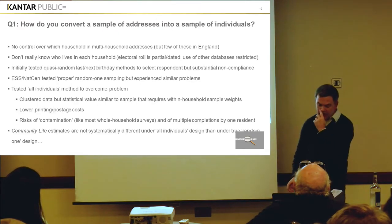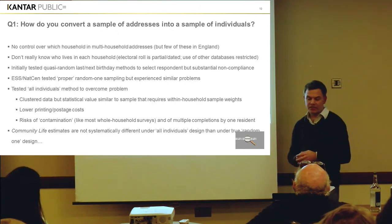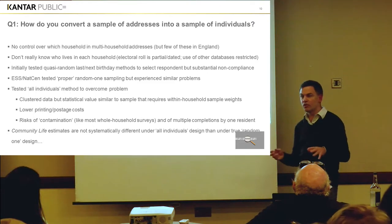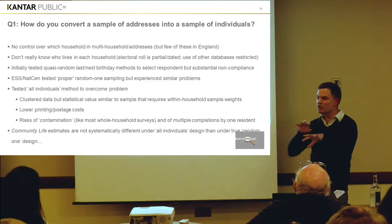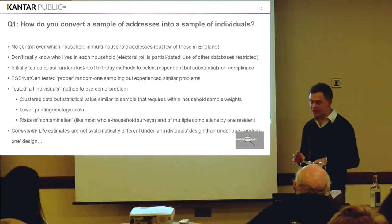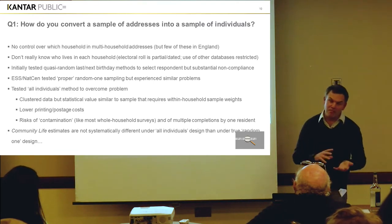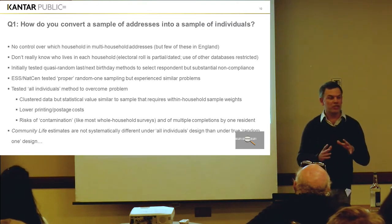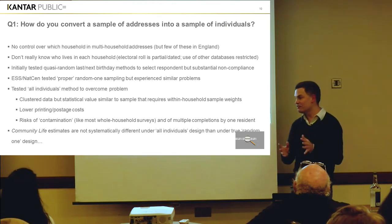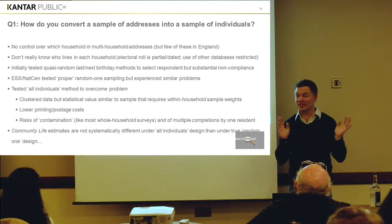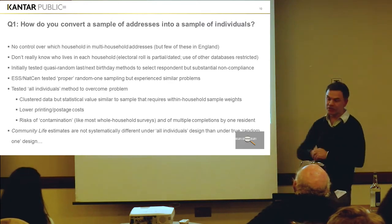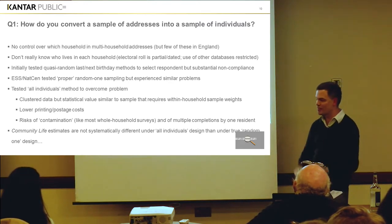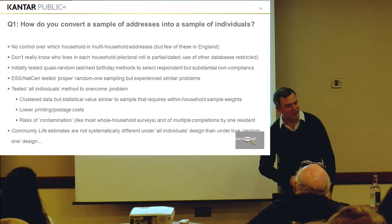So firstly, how do you convert a sample of addresses into a sample of individuals? Well, first of all, there are a small number of addresses — about 2% — that contain multiple households. They're reducing in number, and there are more of those in Scotland and in London than in other parts of the country. There's nothing much we can do about that because they haven't been identified by Royal Mail, they won't be identified by us. So we accept a certain amount that it's whichever household picks up the letter.